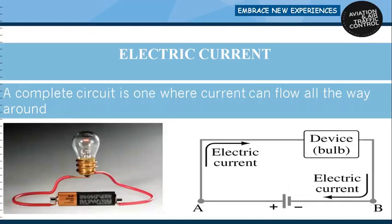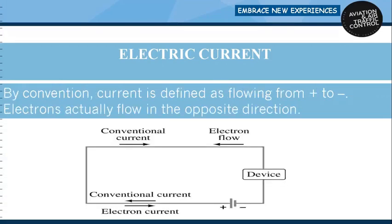A complete circuit is a continuous path for electrons to flow from an energy source, through a device, and back to the source. If we break that path, the flow of electrons stops and the device no longer has power. By convention, conventional current flows from the positive terminal to the negative terminal, while electrons actually flow in the opposite direction.